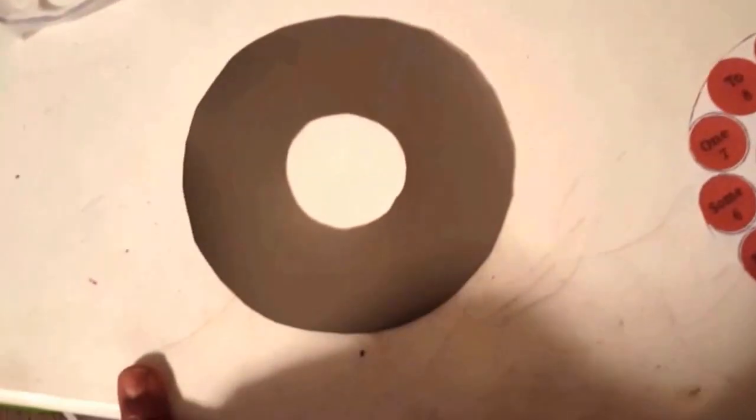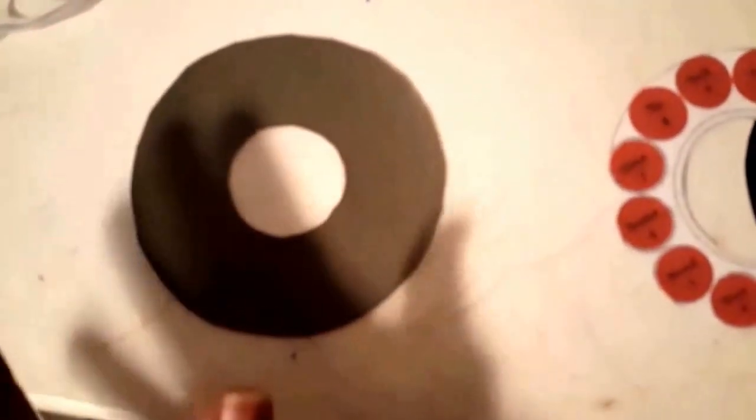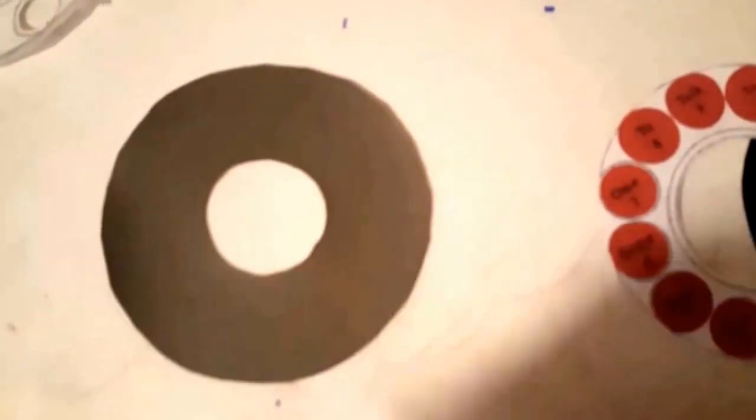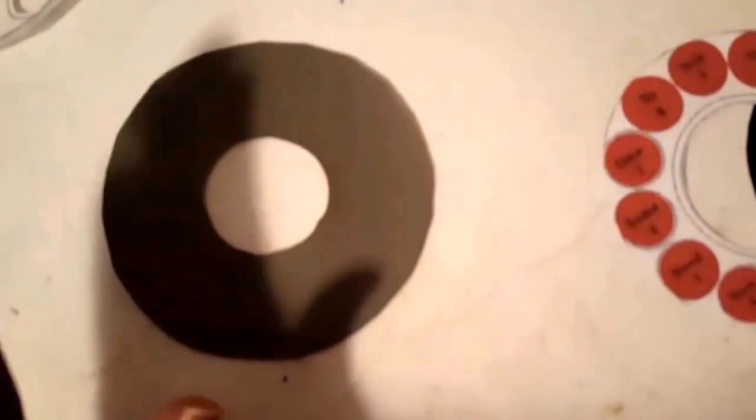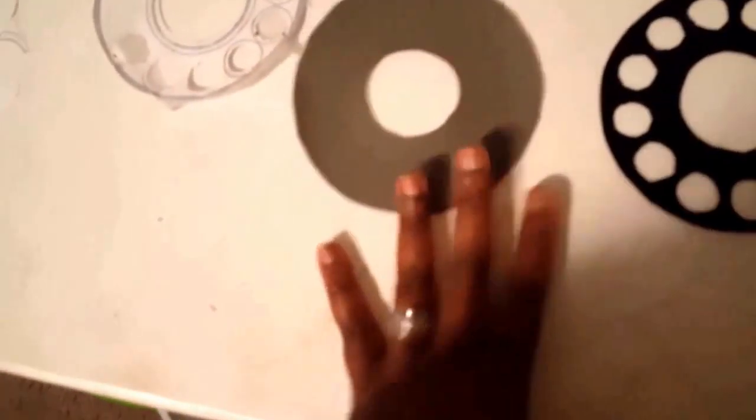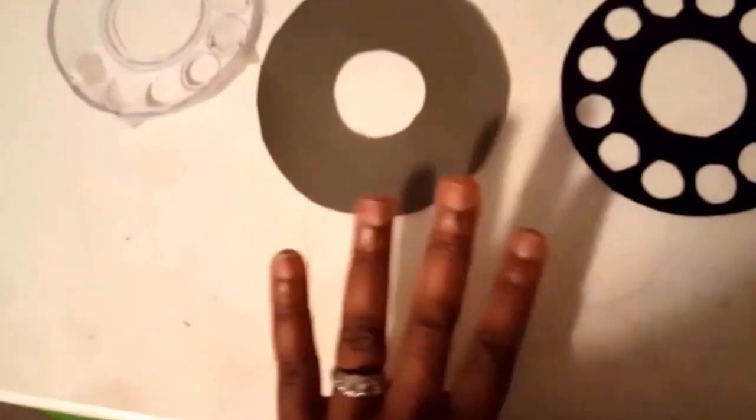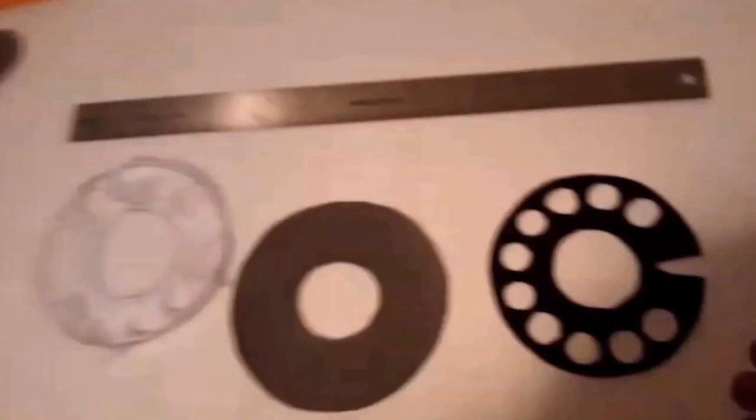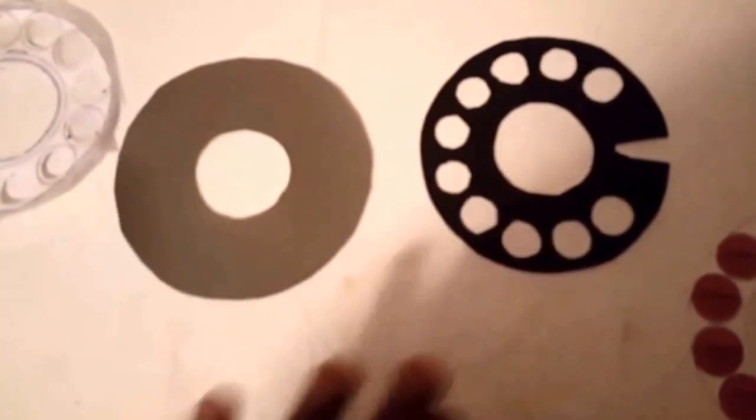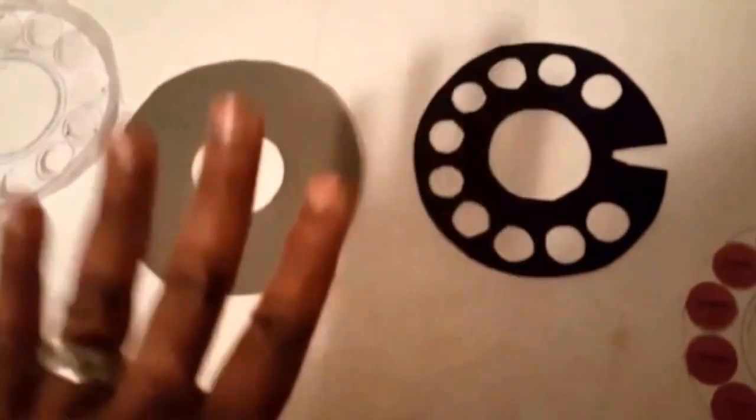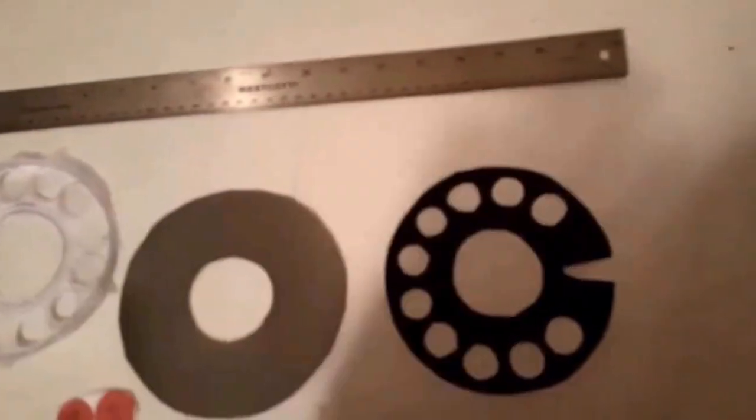You're going to need a sewing machine, unless you can E6000 this purse together. E6000 is a very strong glue, so you should be able to make a simple clutch that you're not going to put a lot of stuff in. In order to put the whole bag together with a lot of weight, I would recommend using a sewing machine.